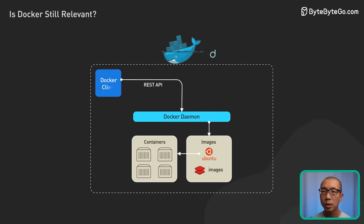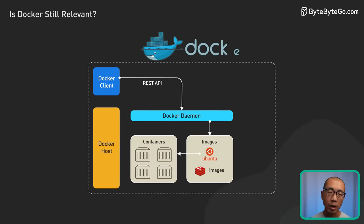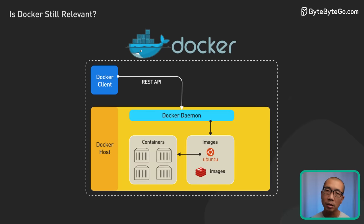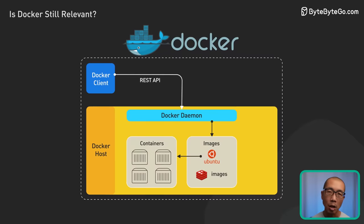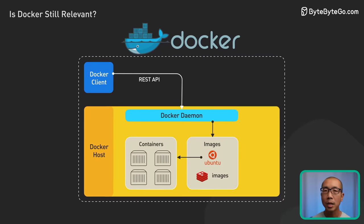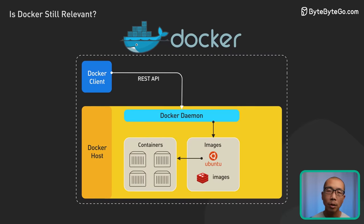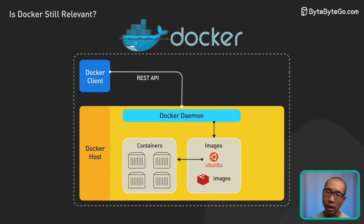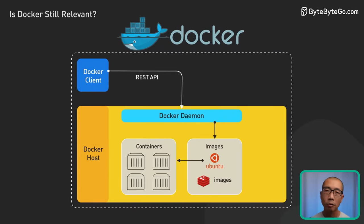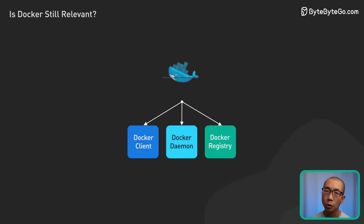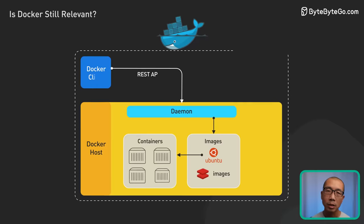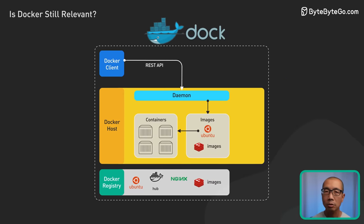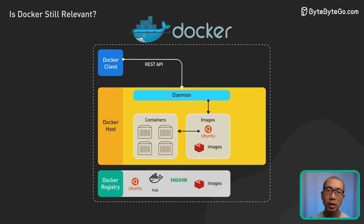The second component is the Docker daemon — the core engine that manages container operations. It resides on the system running the Docker software, commonly known as the Docker host. The Docker daemon can utilize OCI-compliant runtimes like Containerd and CRI-O for running containers. The third component is Docker registries; the most commonly used is Docker Hub, which stores and distributes container images.